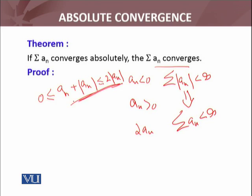Now, Σ|aₙ| is convergent. We learned that Σ(2|aₙ|) will also be convergent. If you multiply by any finite real number, the behavior of the series remains the same. This series is convergent. Now let me define Aₙ as aₙ + |aₙ|.